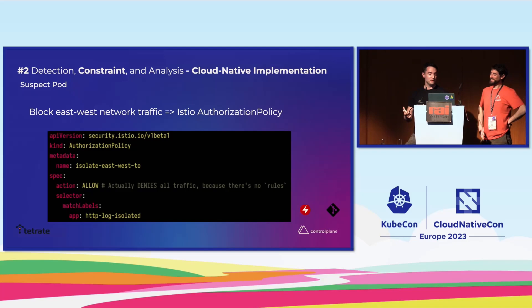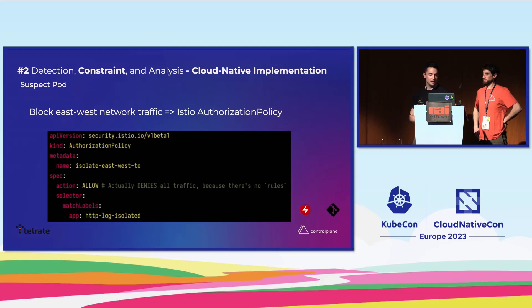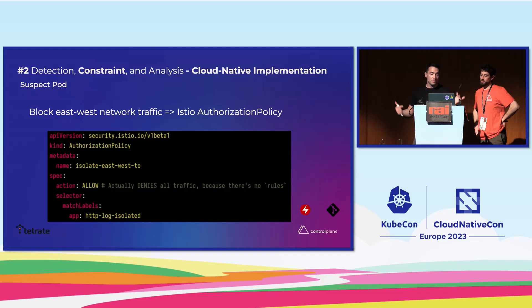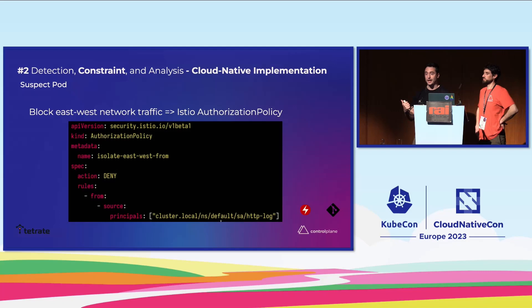To block east-west traffic for the suspect pod, we use the Istio service mesh authorization policy — essentially the layer 7 firewall. We want to block any traffic into the pod, because it could be acting maliciously or poisoning data. We also want to block any calls out of it to stop pivoting. That's not so easy with Istio because of how their API models the world — you need to tell everything else not to accept requests from it.